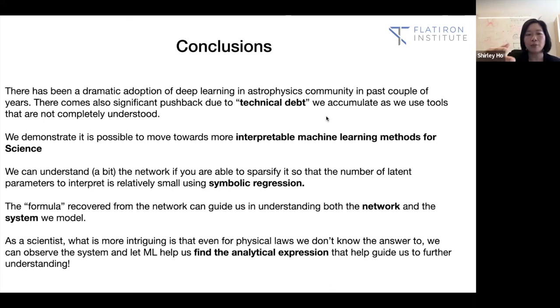There are a lot of improvements we can do with the symbolic regression side and also how to sparsify a network with physical prior or not with physical prior. There's a whole world of pruning. The formula we cover from the network can guide us in understanding both the network and the system we model. As a scientist, I find it very intriguing that even for physical laws, we don't know the answer to. For that cosmological example, we can observe a system and let machine learning sort of guide us to find analytical expression that may be guiding us to further understanding. And I'll pause here for questions. And thank you so much for listening.